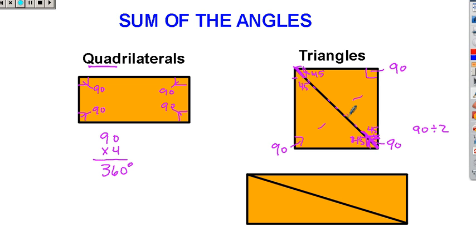So now let's find the sum of the angles in a triangle. Well, this side over here is a big triangle. It has one angle that's 90 degrees, one that's 45, and one that's 45 here. 90 plus 45 plus 45. I'm not going to waste your time adding that up with you, but it comes out to be 180 degrees. So the sum of the angles of a triangle is 180.